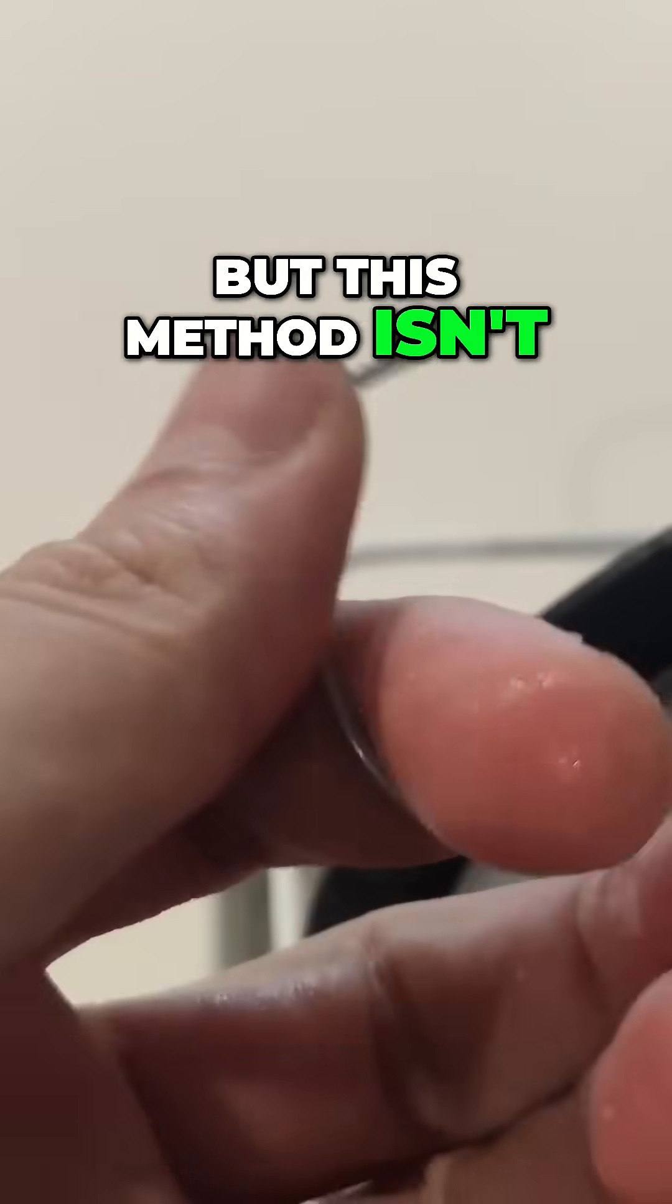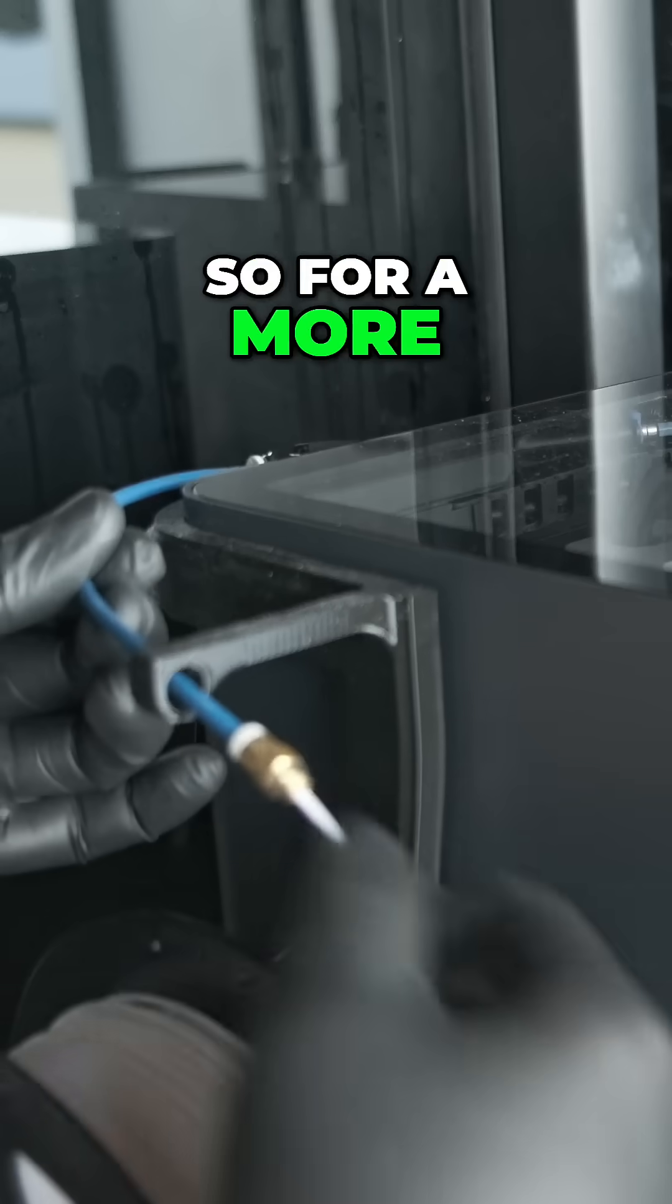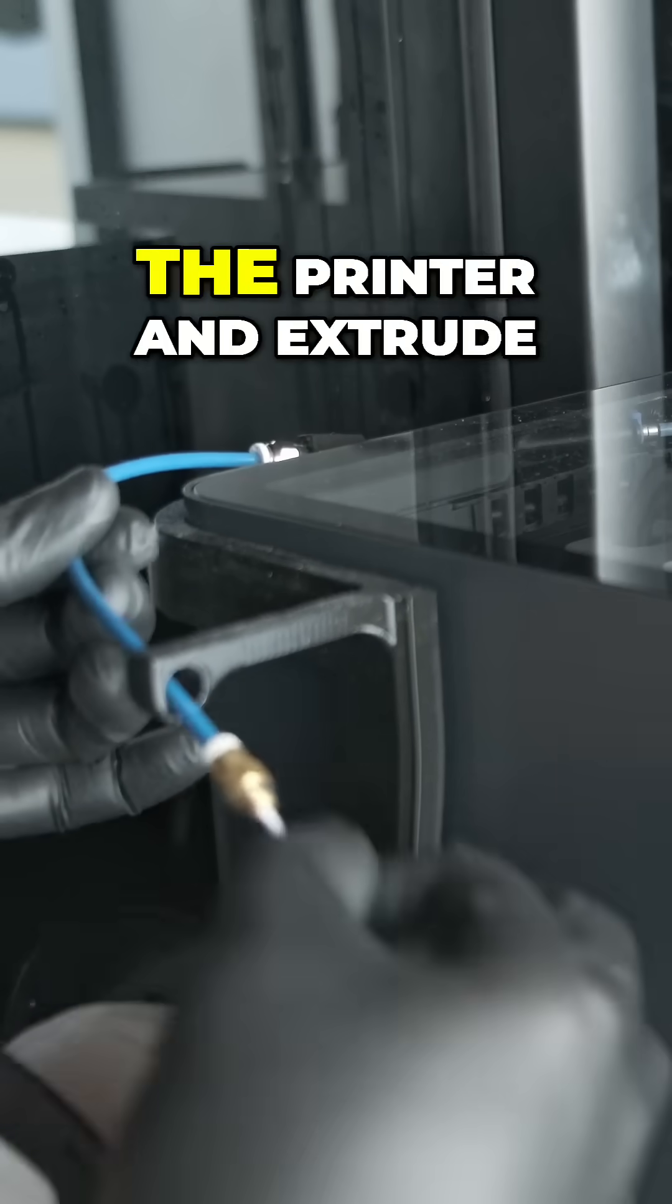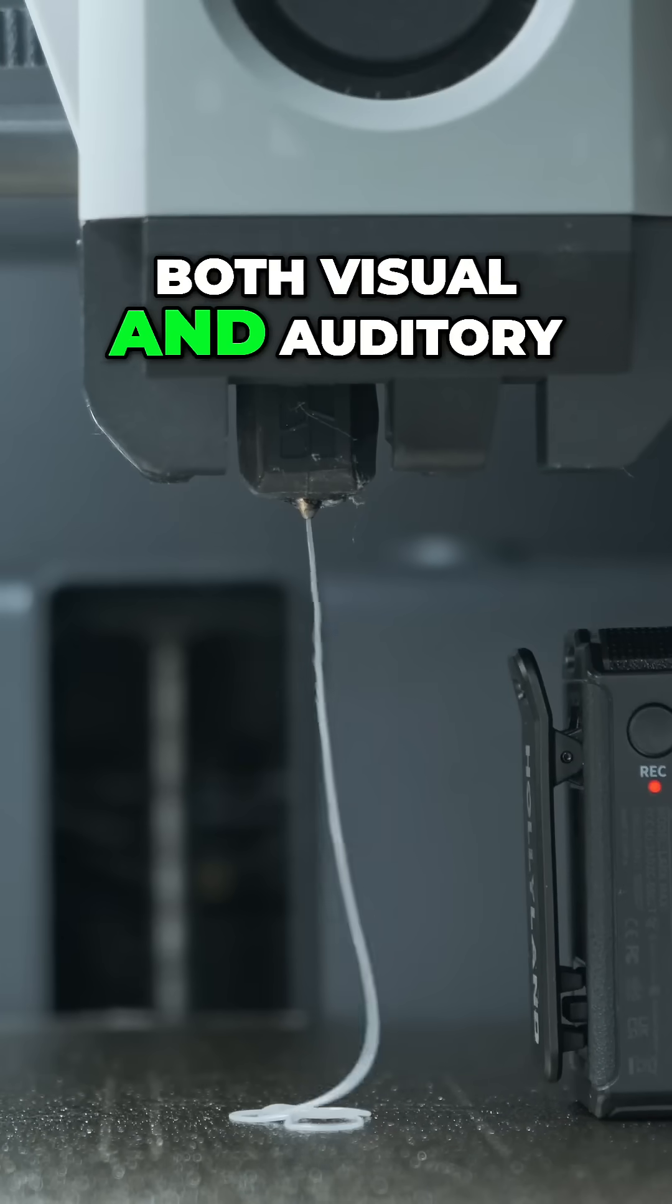But this method isn't always reliable because filament can still cause issues even if it bends properly. So for a more accurate check, load your filament into the printer and extrude a little bit. Watch for signs of moisture, both visual and auditory.